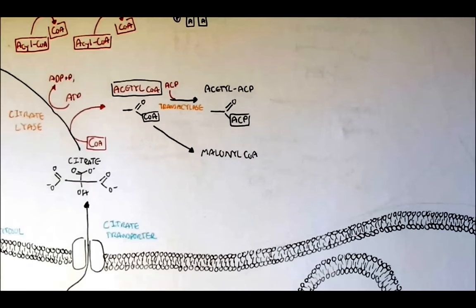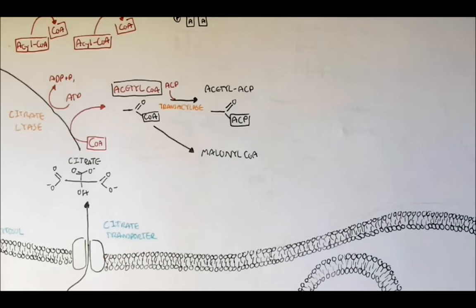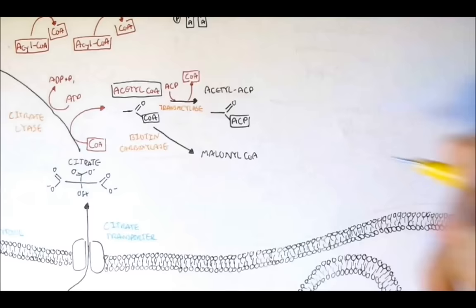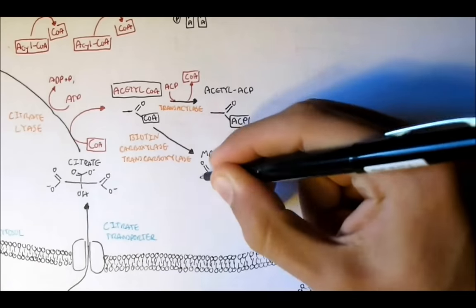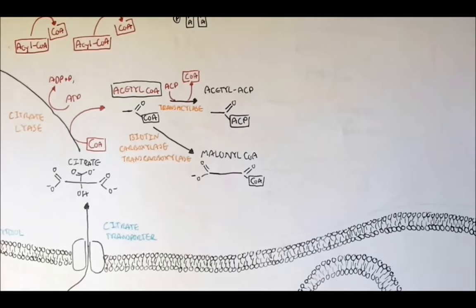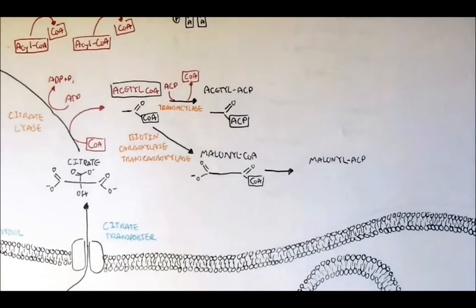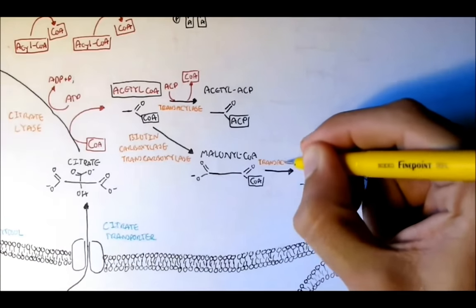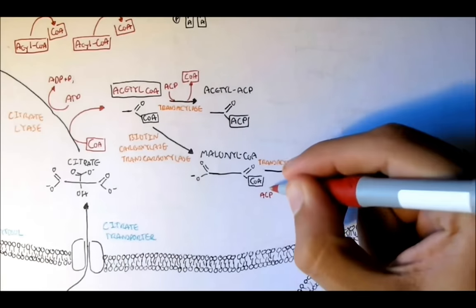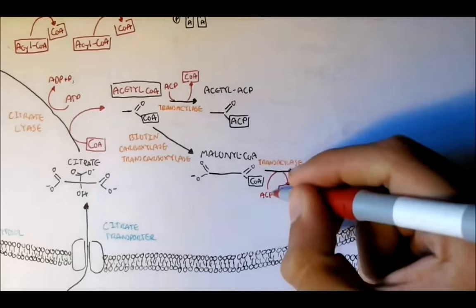Acetyl-CoA can also convert to malonyl-CoA by a two-step process using the enzyme biotin-carboxylase and trans-carboxylase — a pretty large enzyme. Malonyl-CoA then converts to malonyl-ACP by the enzyme malonyl transacetylase, where the ACP is added and the CoA is removed to form malonyl-ACP.